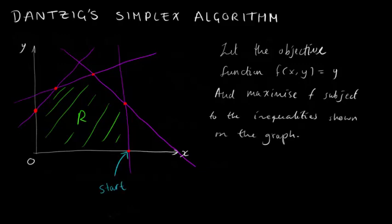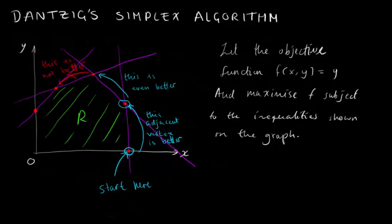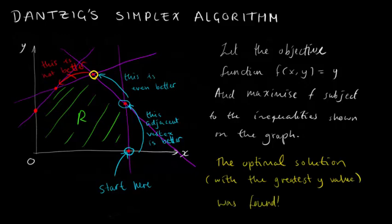If we pretend that we can't see where on the graph this is, and we just chose a random intersection between the lines, we can see that we can move to nearby vertices to find a more optimal solution. Then, once we can't go any higher, we've obviously reached a local optima.